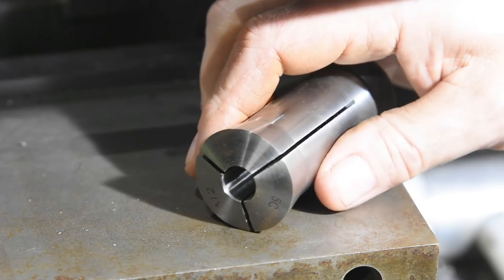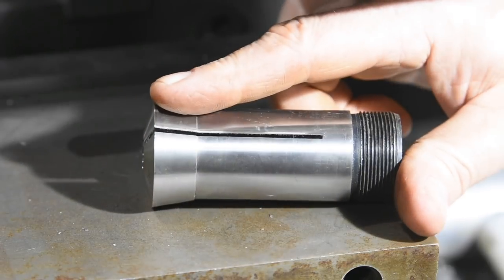So some general points about collets. For collets to work right, you got to treat them right. Basically, that just means that you want to keep them as free of dirt and oil as you can. Oil will cause them to lose the friction that you need for proper clamping. Also, don't tighten them without anything in the chuck. If you do that, you can break off the little arms or fingers or whatever they're called.